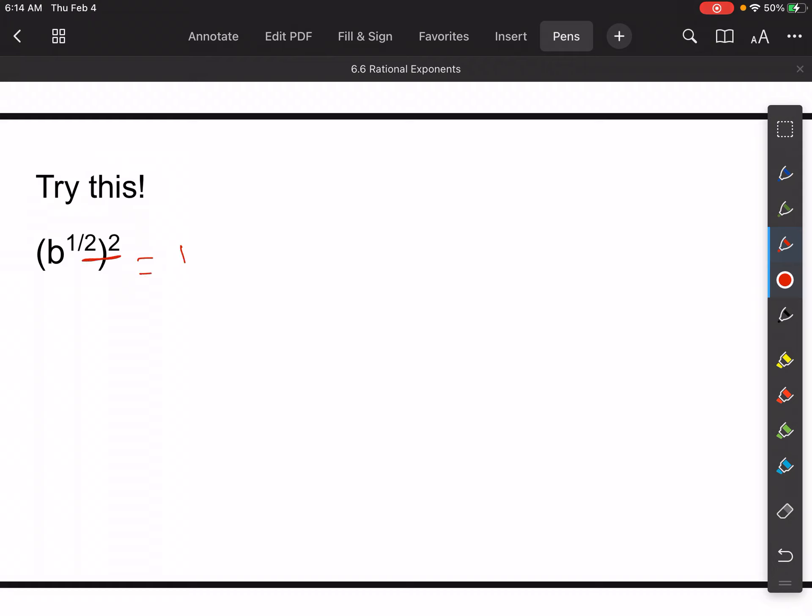So this would be equivalent to b to the first, right? Because one half times two over one gives me one. So what I know about that means is that squaring and half powers undo each other, right? Because they give me a one back.